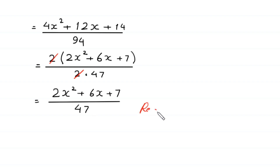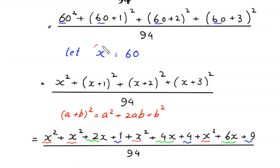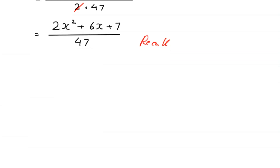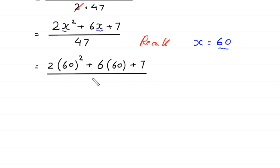Now, recall that we supposed x is equal to 60. We substitute x equals 60 back into the expression. The expression becomes: 2 times (60 squared) plus 6 times 60 plus 7, all divided by 47.